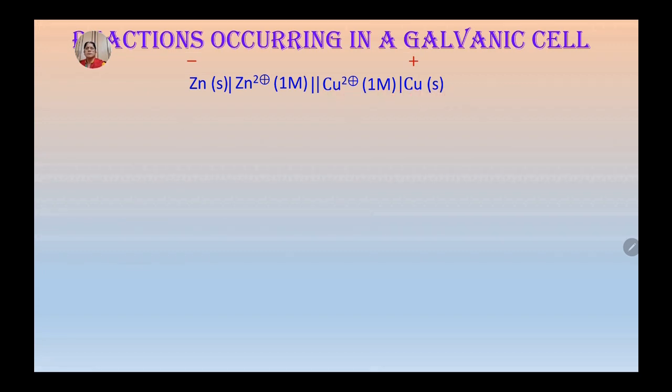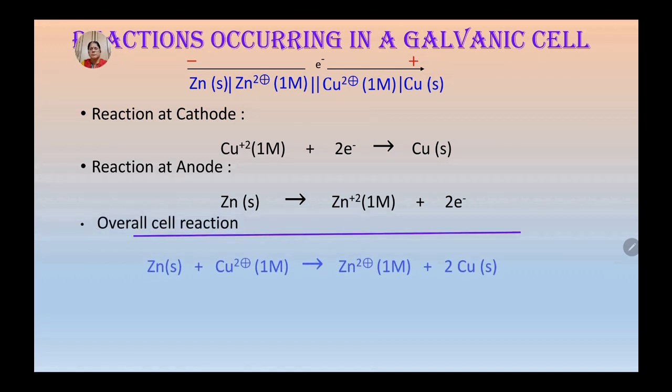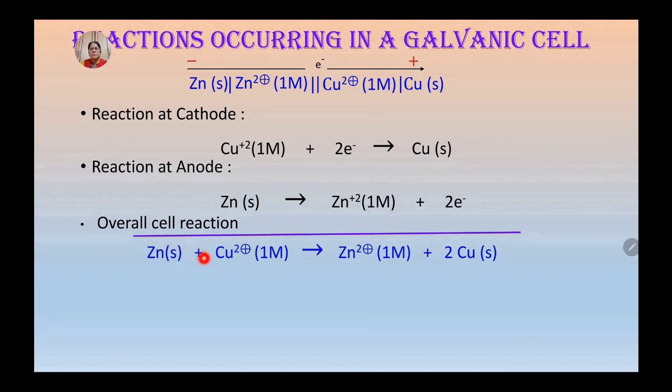Now, chemical reactions that take place at the galvanic cell are at cathode, copper plus two ions reduce, they gain two electrons and reduce to copper solid. Whereas at anode, zinc solid loses two electrons and oxidizes to zinc plus two ions. So reduction takes place at cathode and oxidation occurs at anode and the overall reaction taking place at a galvanic cell is the sum of these two reactions.